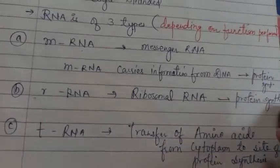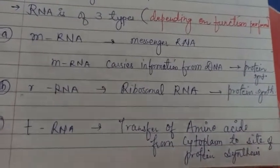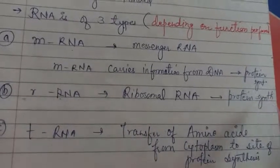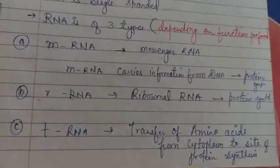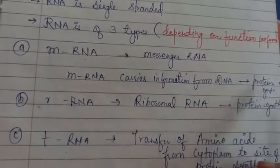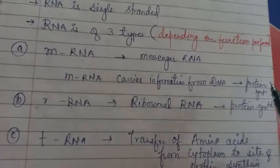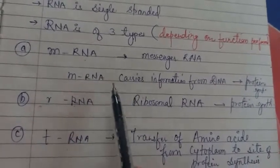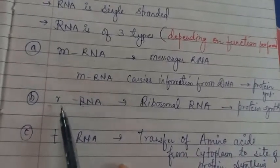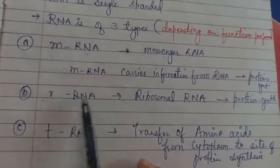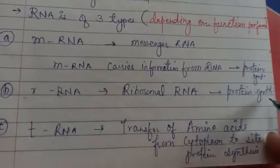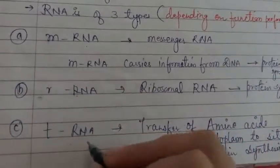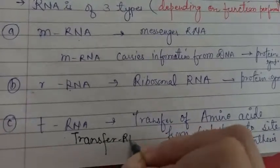RNA does the protein synthesis. These three types of RNA - mRNA, rRNA and tRNA - are involved in protein synthesis. So RNA's major function is to do the protein synthesis. Second type of RNA is ribosomal RNA, rRNA in short, which stands for ribosomal RNA. It also does the protein synthesis. Last and the third type of RNA is tRNA, full form is transfer RNA.